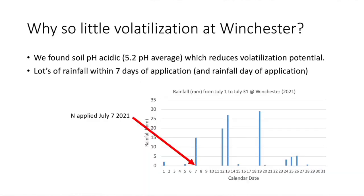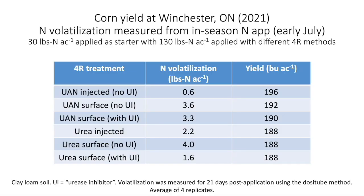Winchester told a very different story — a clear example of the power of soil pH to determine volatilization losses. Winchester had a fairly acidic soil, unique among the trial locations, and overall volatilization losses were pretty low. There was still a trend showing lower losses with the inhibitor and injection, but losses were low across the board. As a result, yields were pretty much similar across all the different application strategies.